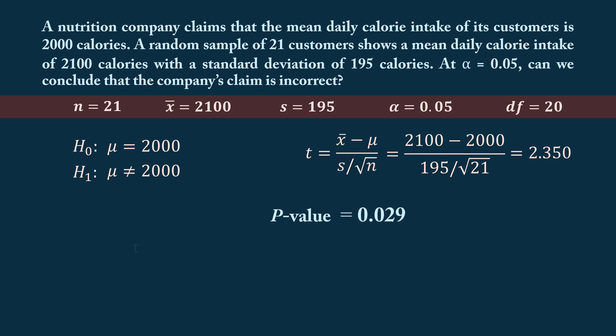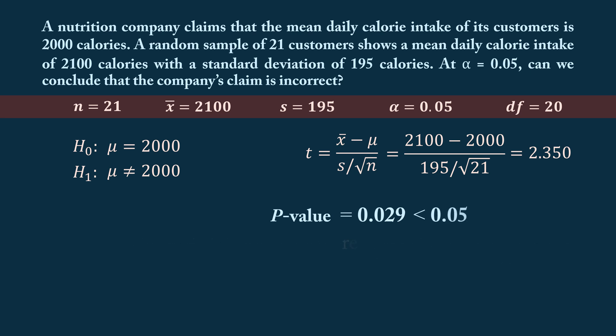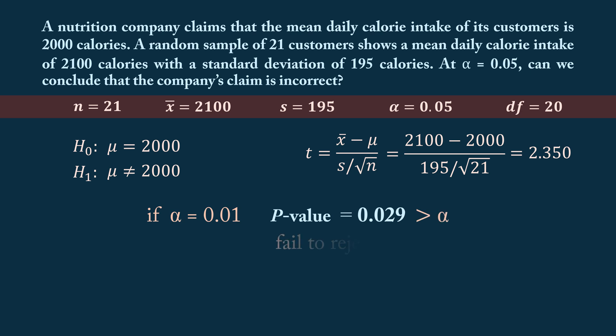The p-value represents the probability of obtaining a sample mean as extreme as 2,100 or more if the null hypothesis is true. Since this p-value of 0.029 is less than alpha of 0.05, we reject the null hypothesis. Note that if alpha were 0.01, the p-value would be greater than alpha, and we would fail to reject the null hypothesis, concluding the result is not significant. Importantly, failure to reject the null hypothesis doesn't prove it is true — it only suggests that the data do not deviate significantly from the null hypothesis.